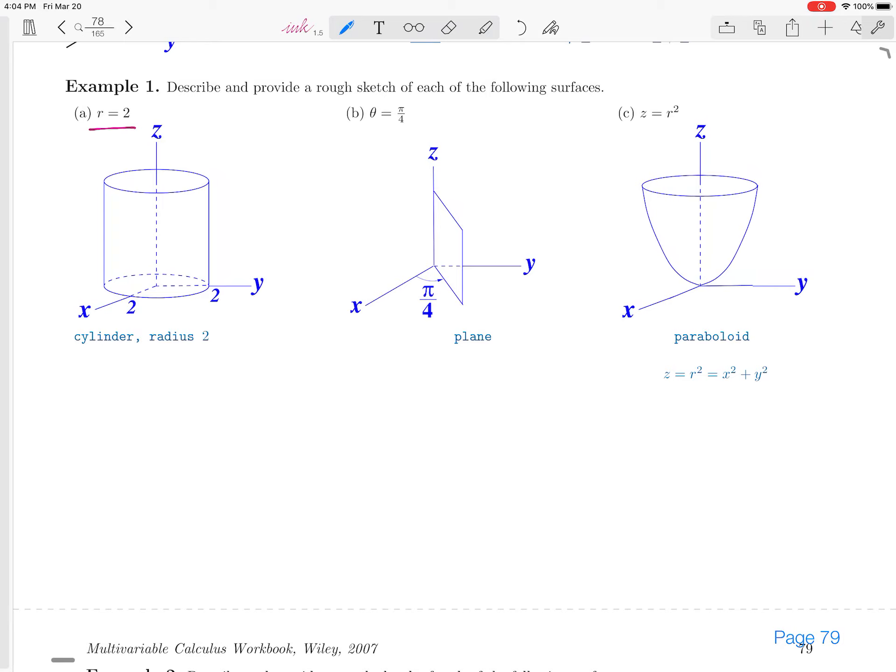If r is equal to 2, we are talking about all points that are two units away from the z-axis, perpendicular to the z-axis.